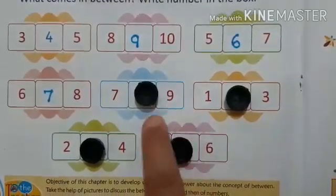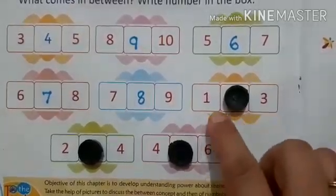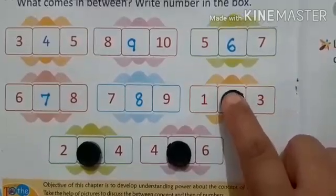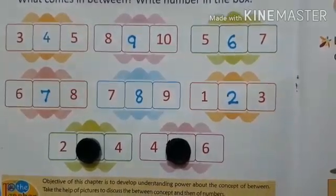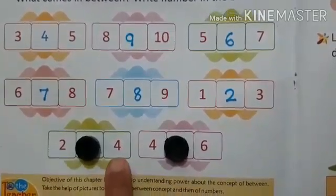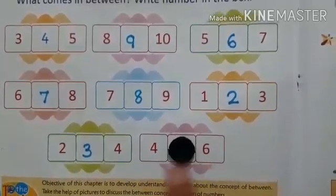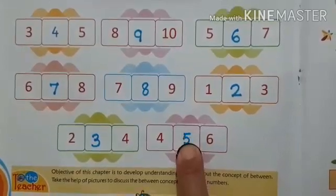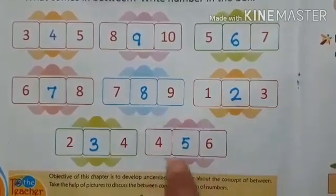7 and 9 - what comes in between 7 and 9? That is 8. Now 1 and 3 - for this you have to say the after number: 1, 2, 3. Next, 2 and 4 - what comes in between? That is 3. Next, 4 and 6 - very good, that is 5. So 4, then 5, and 6. 5 lies in between 4 and 6.